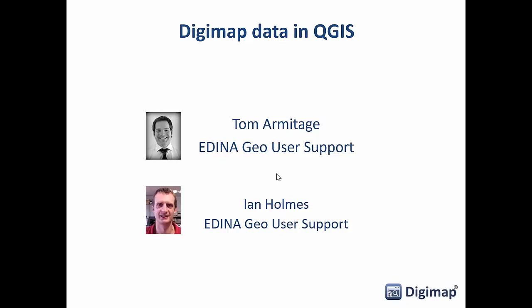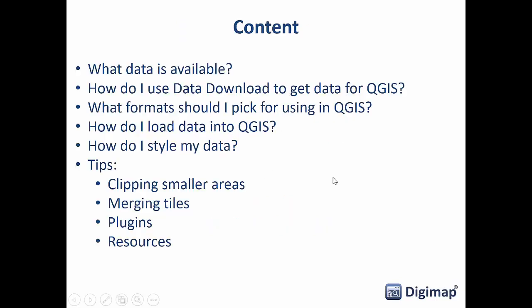So what are we going to talk about today? We're going to have a look at what data is available from Edina that you can download from Digimap and how we can get that into QGIS — what format you should be picking, how to get that data in, and then we'll look more in depth at QGIS: how to style the data and do some simple geoprocessing. We'll also talk about a few of the plugins and tips and tricks.